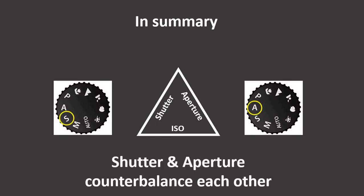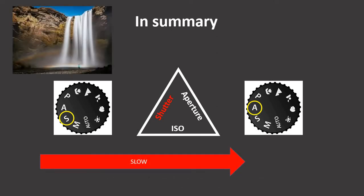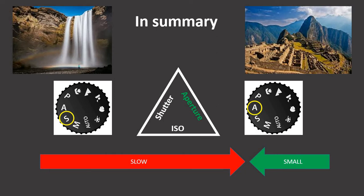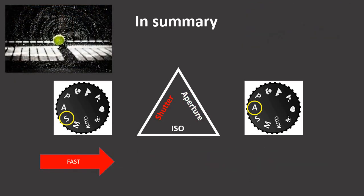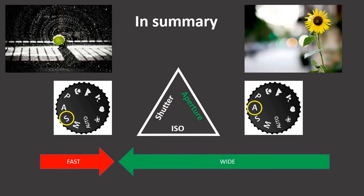In summary, shutter and aperture counterbalance each other — what you do with one you need to consider the other. A slow shutter speed lets in lots of light and motion, so water from a waterfall appears blurred because it takes a few seconds to gather the image. But because the shutter is letting lots of light in, it needs to be counterbalanced with a small amount of light from the aperture, so in this case it's set to narrow, keeping the background and foreground sharp. With a fast shutter speed the camera blinks very quickly to let a small amount of light in, capturing a frozen-in-time image. Because it's only letting a little light in, we need more light to balance, so the aperture needs to be wide — and a wide aperture in this case causes the background to go blurry.